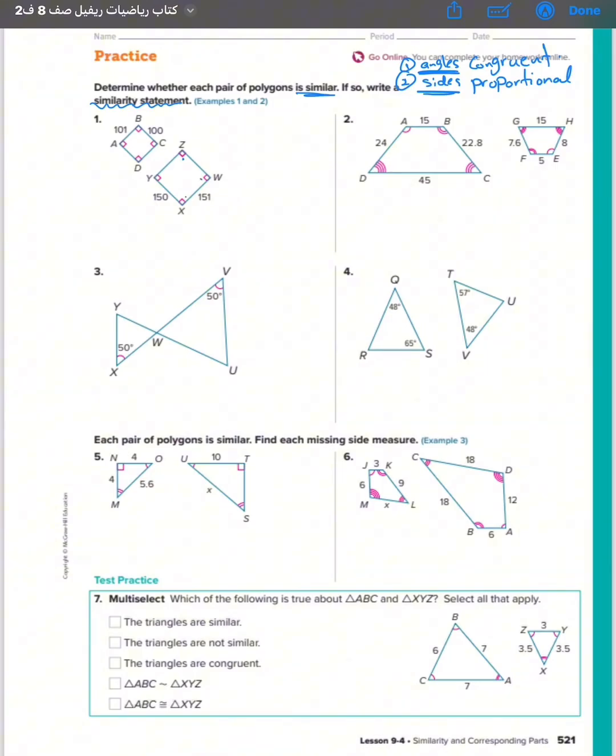Let's start with question number one. We can see that angles are congruent, so let's see about the sides. I will take 150 over 100 and 151 over 101. This one with that. No, this is 1.5 and this is 1.4. So the corresponding sides are not proportional, so it is not similar. We must specify two things, so this one is not similar because the corresponding sides are not proportional.